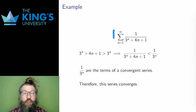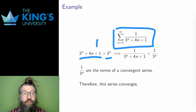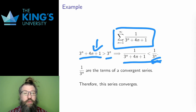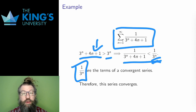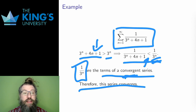Here's another example. The term here is 1 over (3^n + 4n + 1). Since 3^n + 4n + 1 is larger than 3^n — I am adding something positive, after all — if I take reciprocals I reverse the inequality again. So 1 over (3^n + 4n + 1) is less than 1 over 3^n. But 1 over 3^n is the terms of a geometric series with common ratio 1/3, and common ratio 1/3 is less than 1, so that's a convergent geometric series. Therefore, the terms of the new series, which are all positive, are smaller than the terms of a series that I already know is convergent. Therefore, this new series also converges.